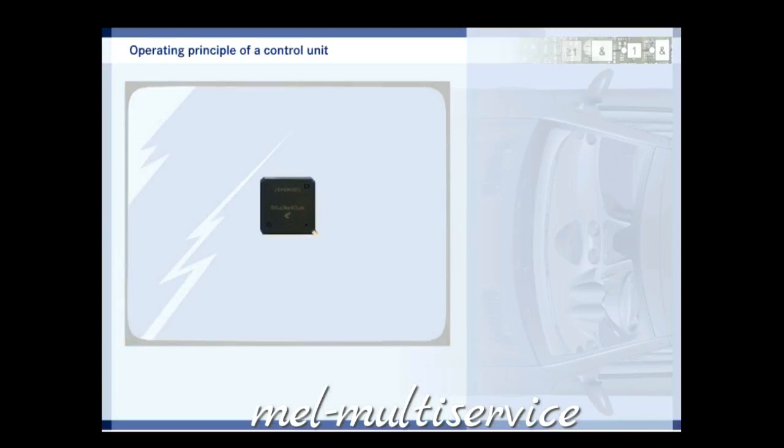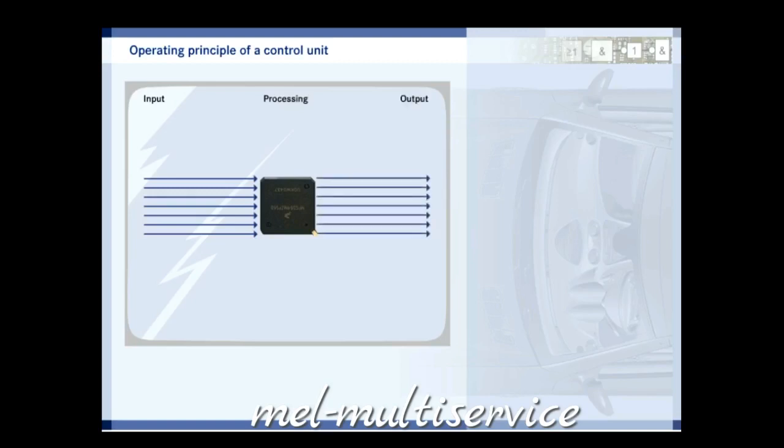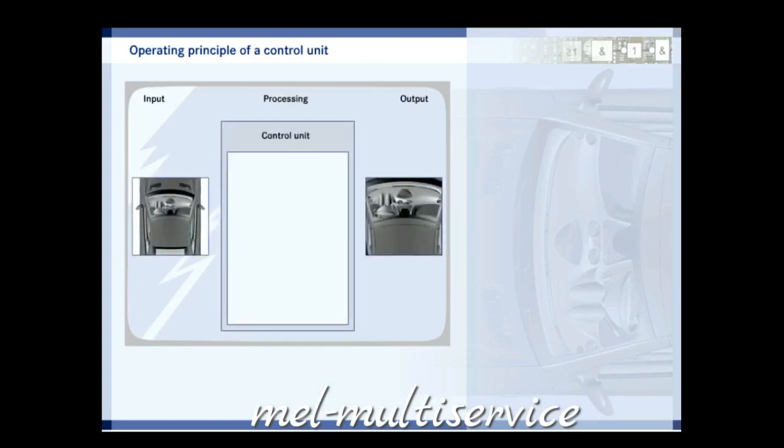The microprocessor works through the following steps in cycles. Input: The data is read. Processing: The data is processed. When necessary, the data is linked to information in the storage modules. Output: The data is generated. This principle of operation can be clearly illustrated using the interior lighting control.